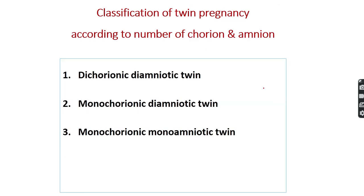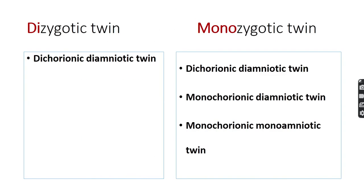The classification of twin pregnancy is based on the number of chorions and amnions. In a normal single-fetus pregnancy there is always one chorion, one placenta, and one amnion. In twin pregnancy, two fetuses are present but the number of chorions and amnions differs, giving three types: dichorionic diamniotic, monochorionic diamniotic, and monochorionic monoamniotic.